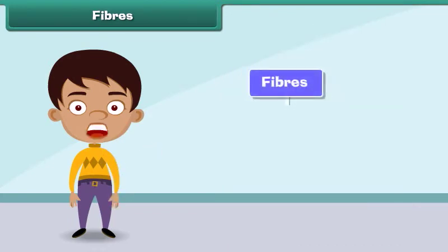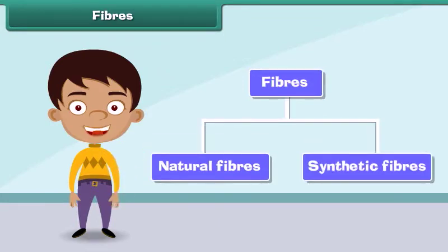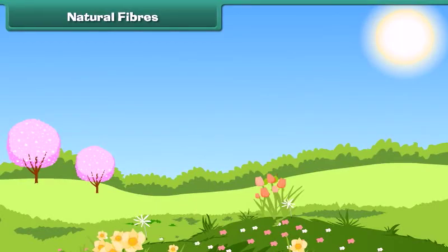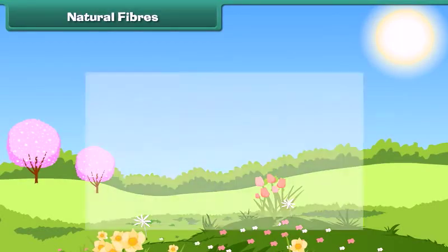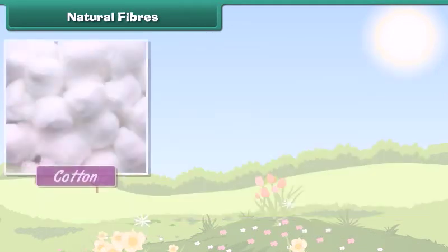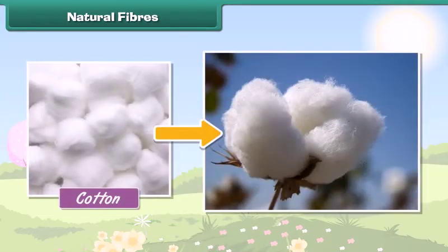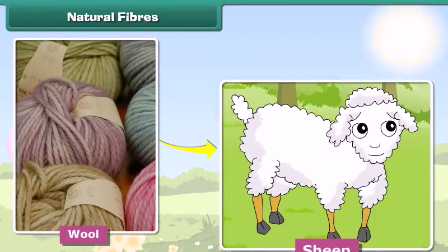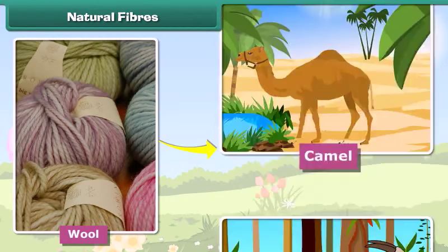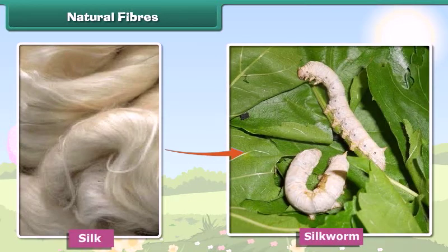Fibers are of two types: natural fibers and synthetic fibers. Natural fibers are made from plants and animals. Cotton is obtained from plants, wool is obtained from sheep, goats, and camels, and silk is obtained from silkworms.